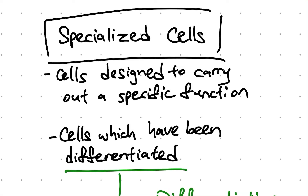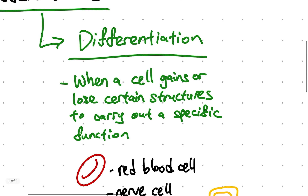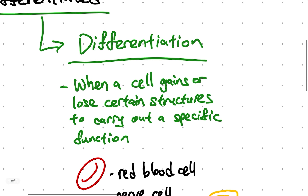Specialised cells are cells designed to carry out a specific function. These are cells which have been differentiated. Differentiation being when a cell gains or loses certain structures to carry out a specific function.